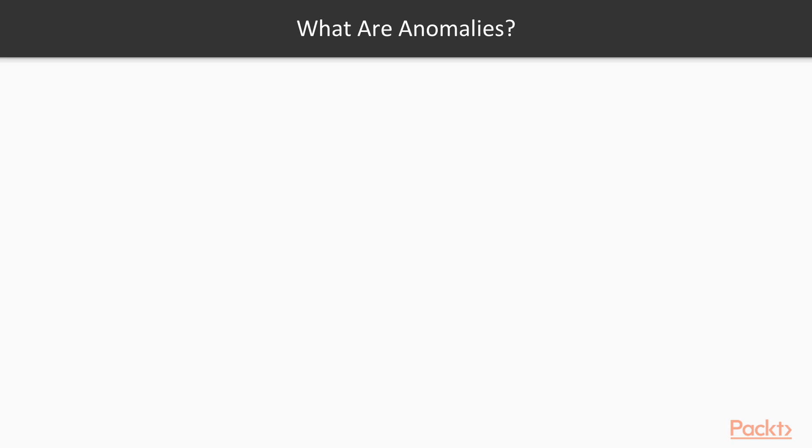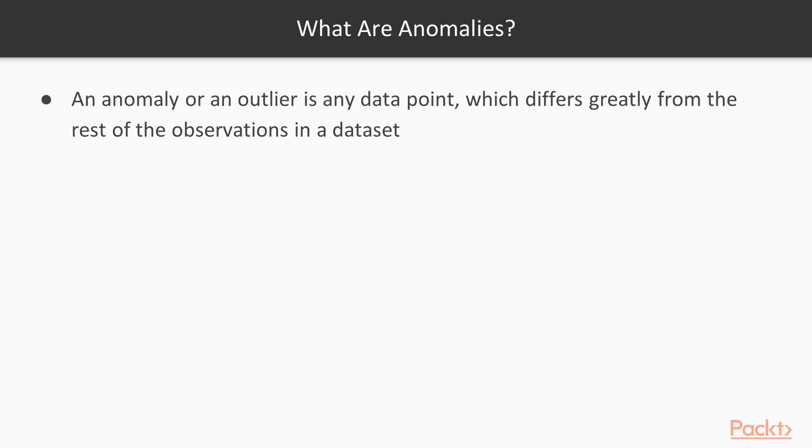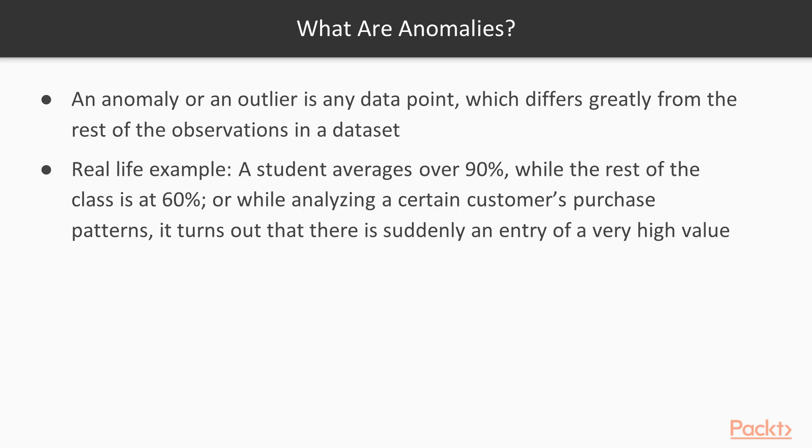So now the question is, what are the anomalies? An anomaly or an outlier is any data point which differs greatly from the rest of the observations in the dataset. A real-life example could be when a student's grade averages over 90% while the rest of the class averages around 60%. Another example is that while analyzing a certain customer's purchase patterns, it turns out that there is suddenly an entry for a very high value. The very different data points in these two examples are considered as anomalies or outliers.